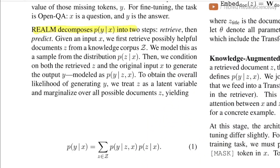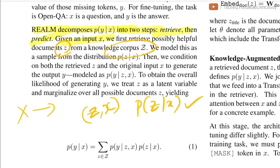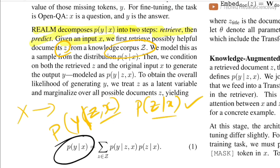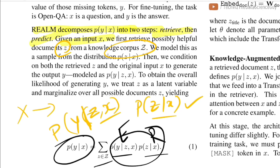REALM decomposes p(y|x) into two steps: retrieve and predict. Given input document x and knowledge corpus Z, it retrieves helpful documents z, learning distribution p(z|x) for the retriever. Then, given z and x, it predicts the masked token value, learning p(y|x,z). The overall likelihood marginalizes over all documents in the corpus, combining the retriever and encoder components.